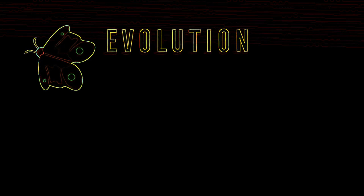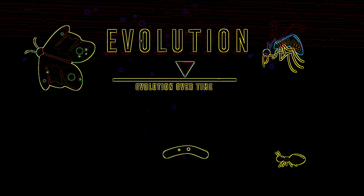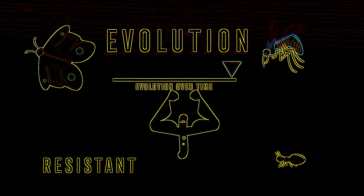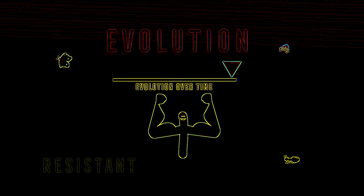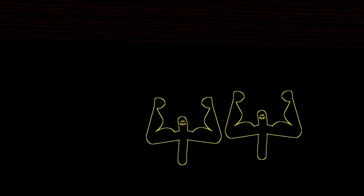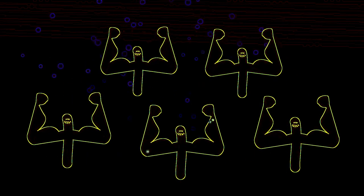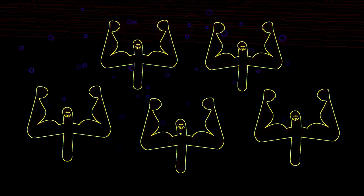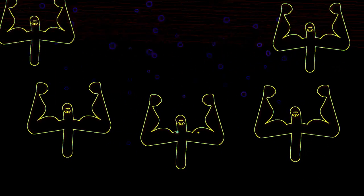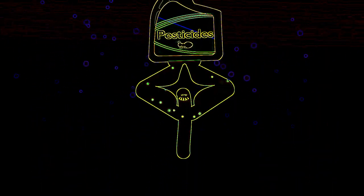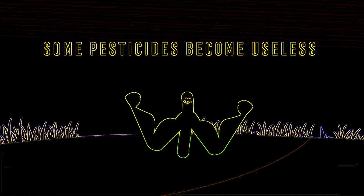Through the process of evolution and natural selection, some pests become resistant to pesticides — they survive and reproduce. The overuse of pesticides has led to an increasing number of those resistant organisms, which means that some pesticides are now useless.